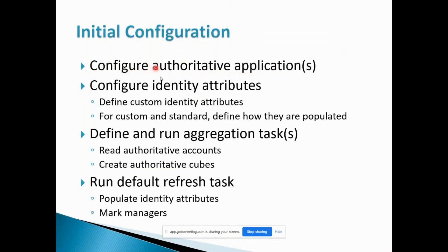Second, once the application is configured, we need to configure the identity attributes based on the authoritative application attributes. For example, if we have an HRMS or Active Directory system where we get first name and last name, we need to map those in SailPoint so that whenever we get data from the authoritative application it will directly populate the identity attributes. This is identity mapping.